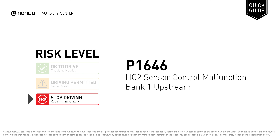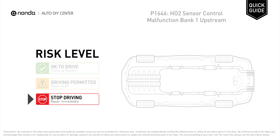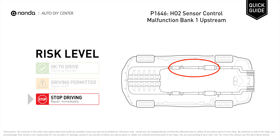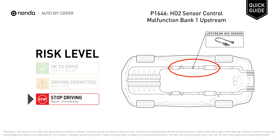P1646 is a diagnostic trouble code for HO2 sensor control malfunction on Bank 1 upstream. Under this circumstance, stop driving and repair your vehicle immediately. It indicates a fault with HO2 sensor control malfunction on Bank 1 upstream.